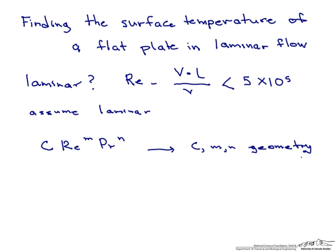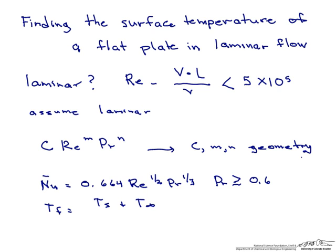In this particular case, we find that our Nusselt number has a correlation of 0.664 Reynolds to the 1 half, Prandtl to the 1 third, as long as our regime is laminar and our Prandtl number is greater than or equal to about 0.6. And in looking up our properties, we use the film temperature, which is the surface temperature of the plate plus the temperature of the fluid flowing over the plate divided by 2.